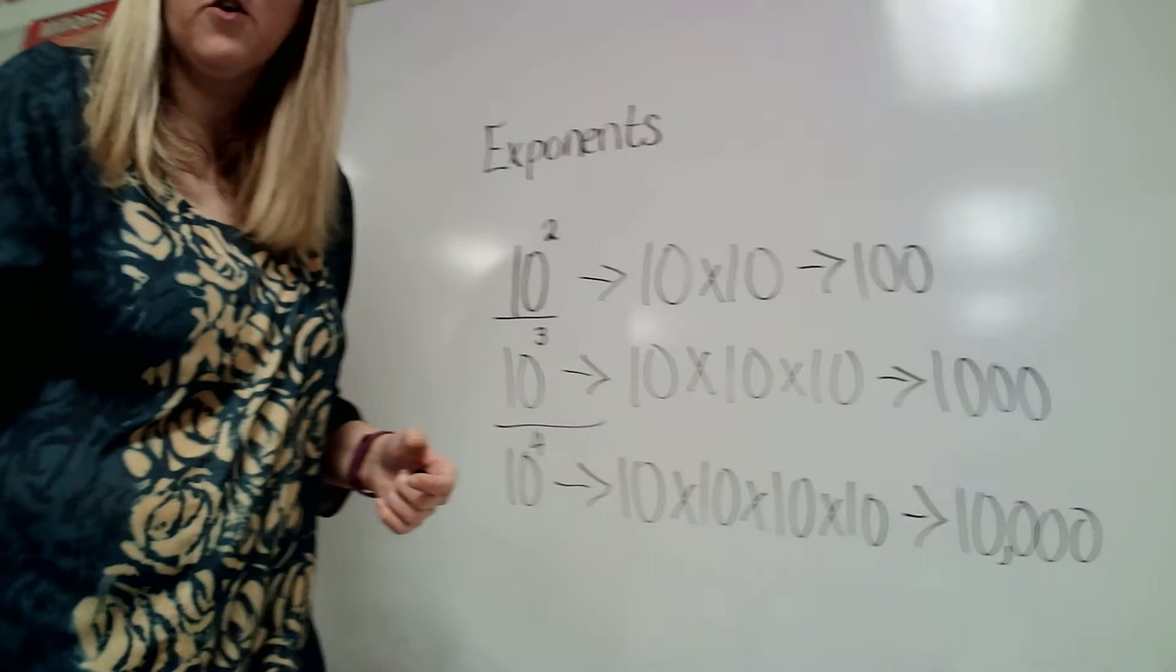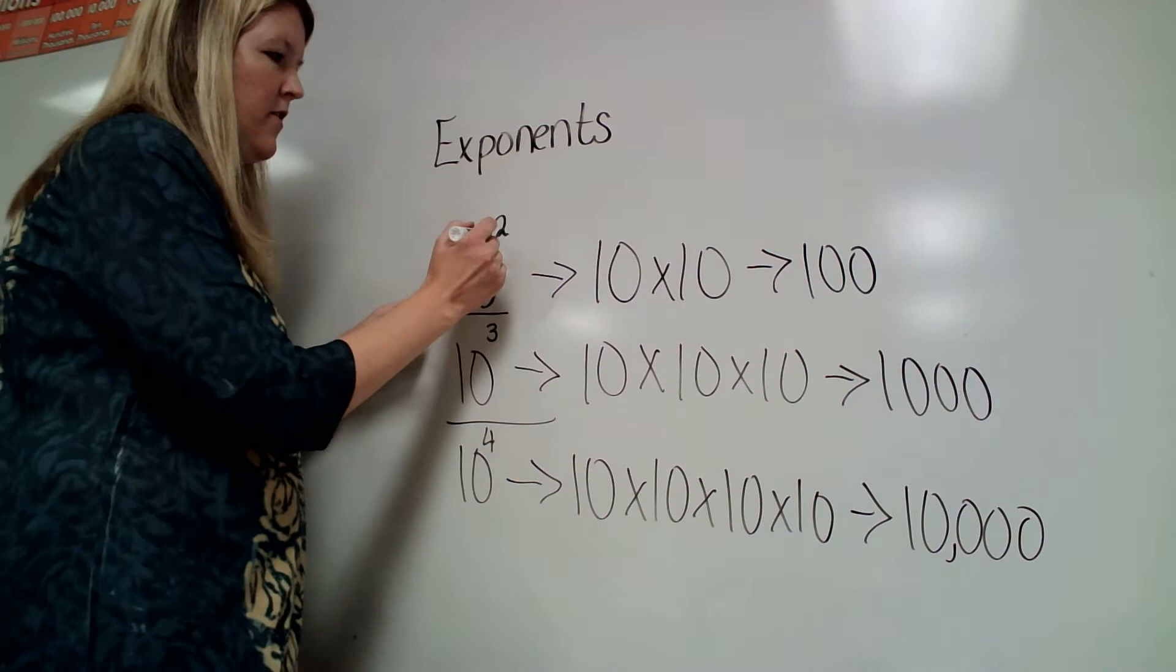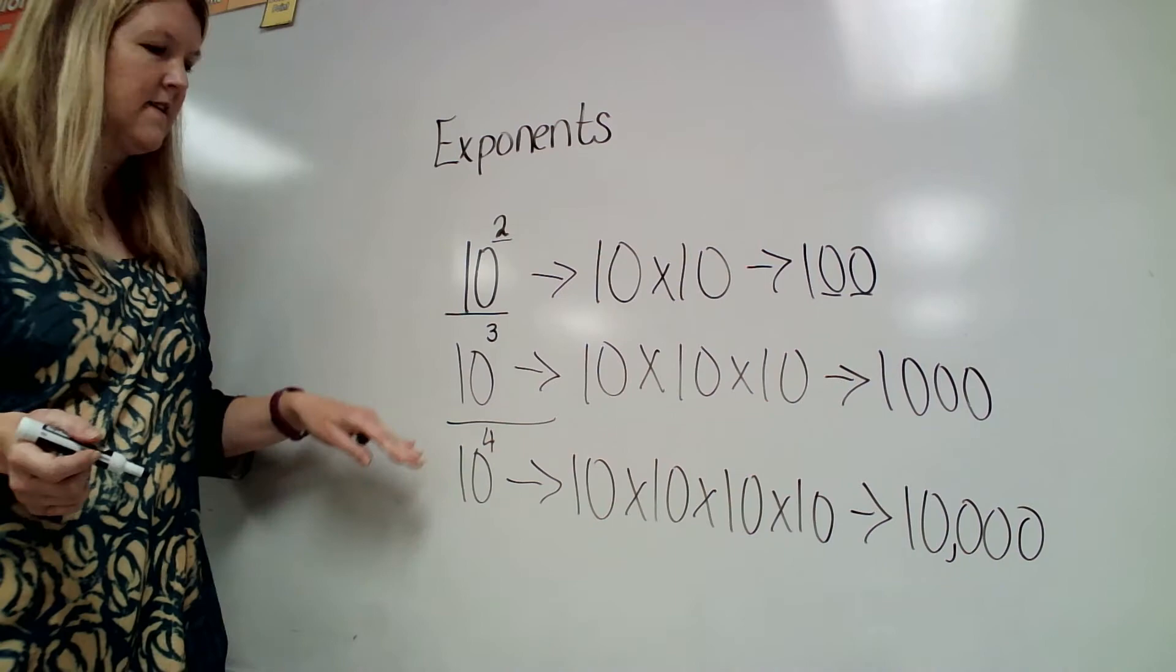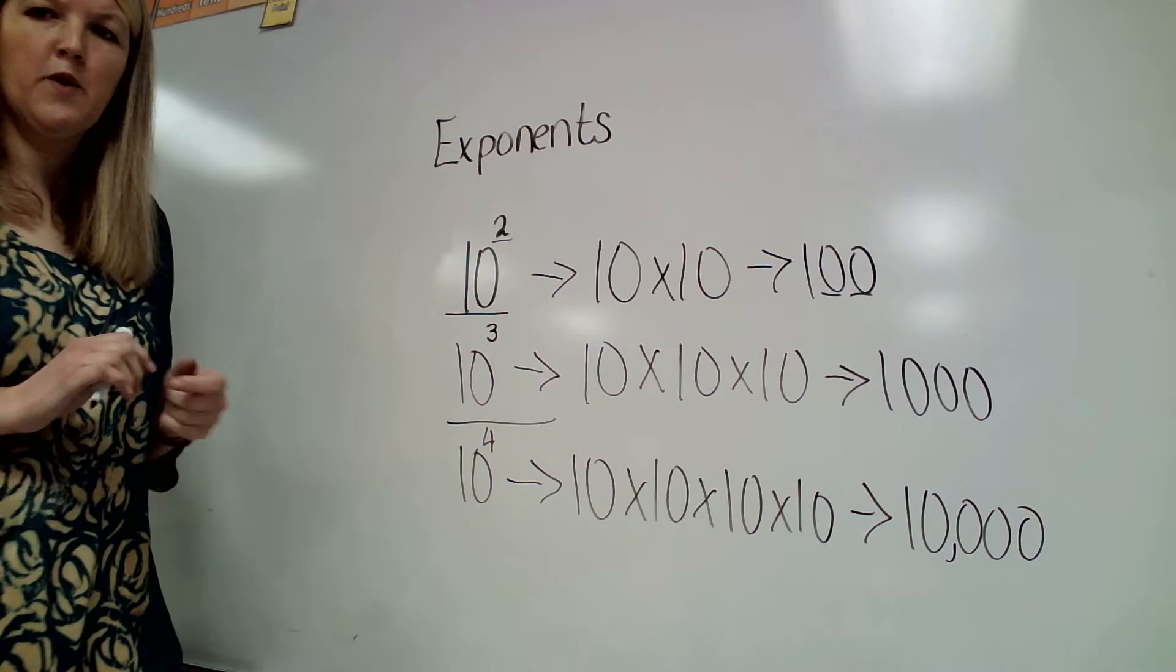So you may have noticed another pattern here. Whenever we are using powers of 10, this exponent also shows us how many zeros we're going to have in our number. So 10 to the 2nd power had 2 zeros. 10 to the 3rd power has 3 zeros. And then 10 to the 4th power, we see the 4 zeros. So we can check in that way too.